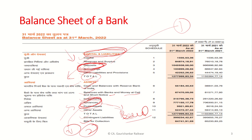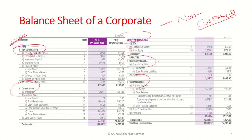The format of the balance sheet of a bank — the financial statement of a bank — is governed by the Banking Regulation Act (BR Act). Though banks are required to follow accounting standards and accounting principles, the format is prescribed in the Banking Regulation Act. In the case of corporates, the format of the balance sheet or financial statement is prescribed under the Companies Act.